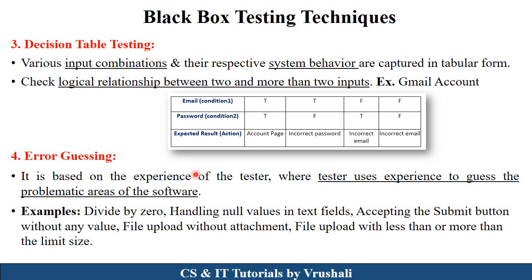The next technique is error guessing. Testers have experience with different types of product testing, so they use guessing techniques to anticipate what types of errors will be generated in a particular product or module — like divide by zero errors or handling null values. For example, in a registration system where mobile number is compulsory, submitting the form without entering a mobile number will generate an error. Similarly, uploading a file without an attachment, or uploading a passport photo that is more or less than the required 10 KB limit, will also generate errors. This is called error guessing.